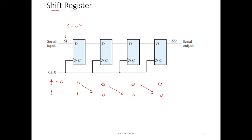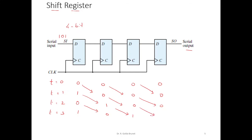At time t=2, the next incoming data is 0. This 0 is accepted by the first flip-flop, and the 1 from t=1 shifts forward through the second, third, and fourth flip-flops respectively.